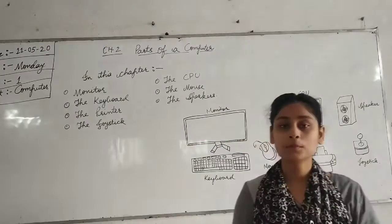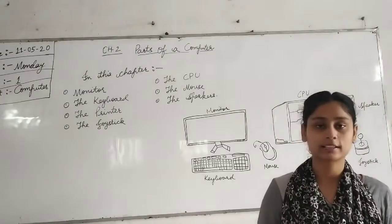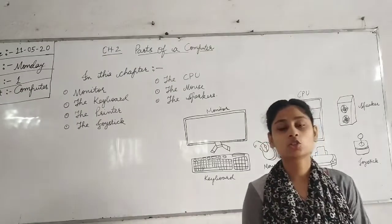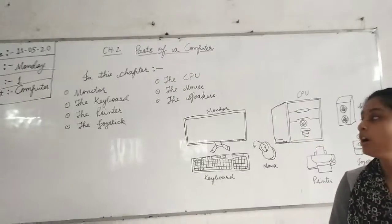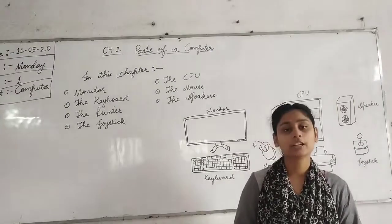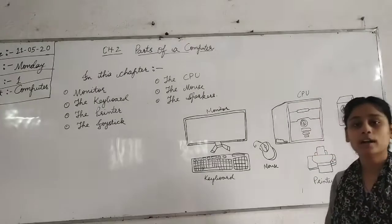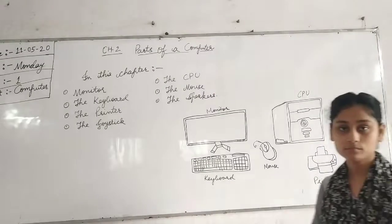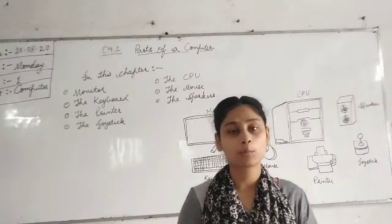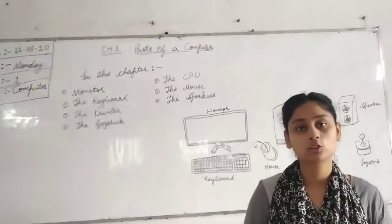Speakers are used to listen to music. The joystick is used to play games on the computer. We can play games with the use of a joystick. Joystick has three or four buttons and it is also a pointing device. We can point through the monitor and play the game.